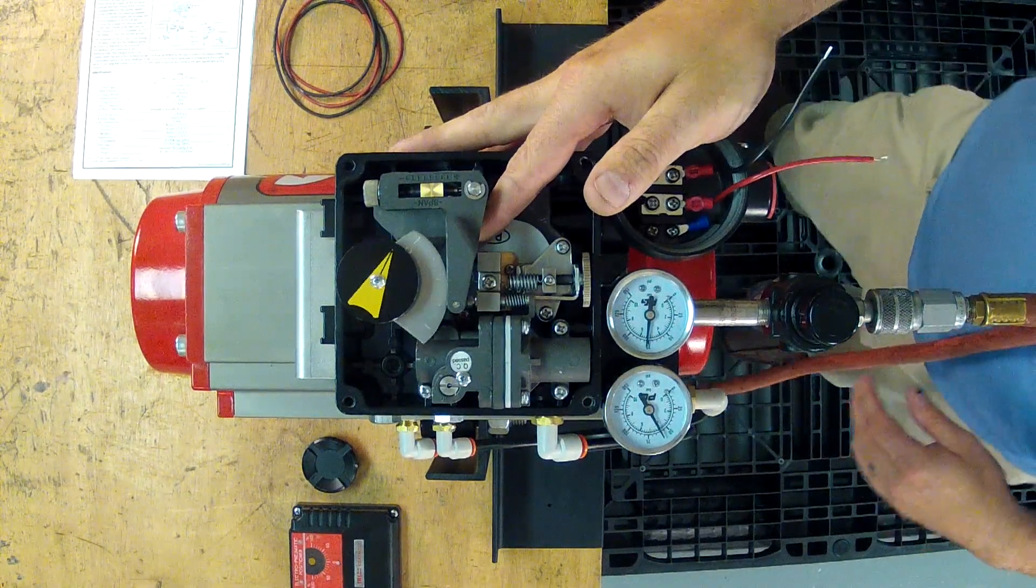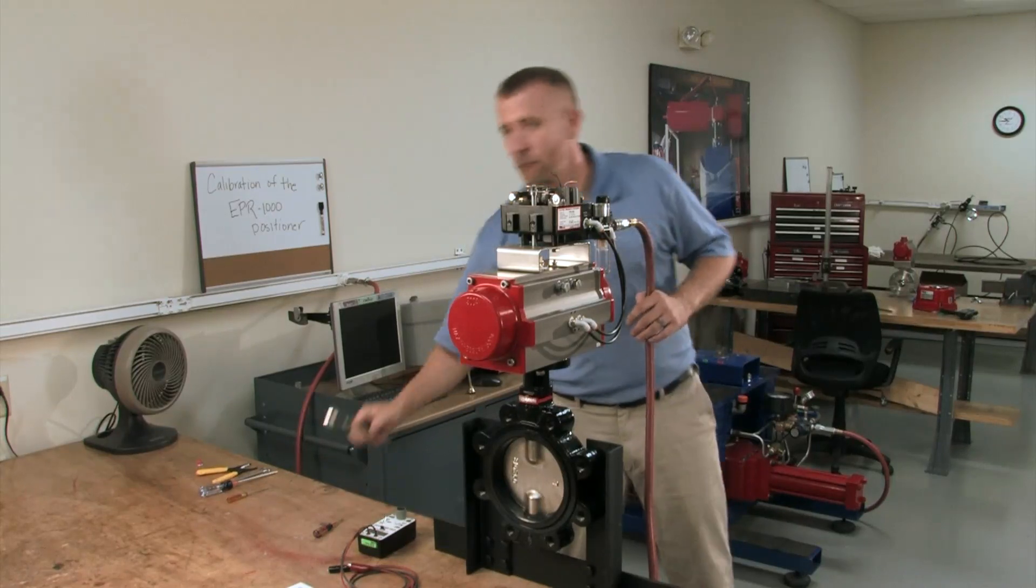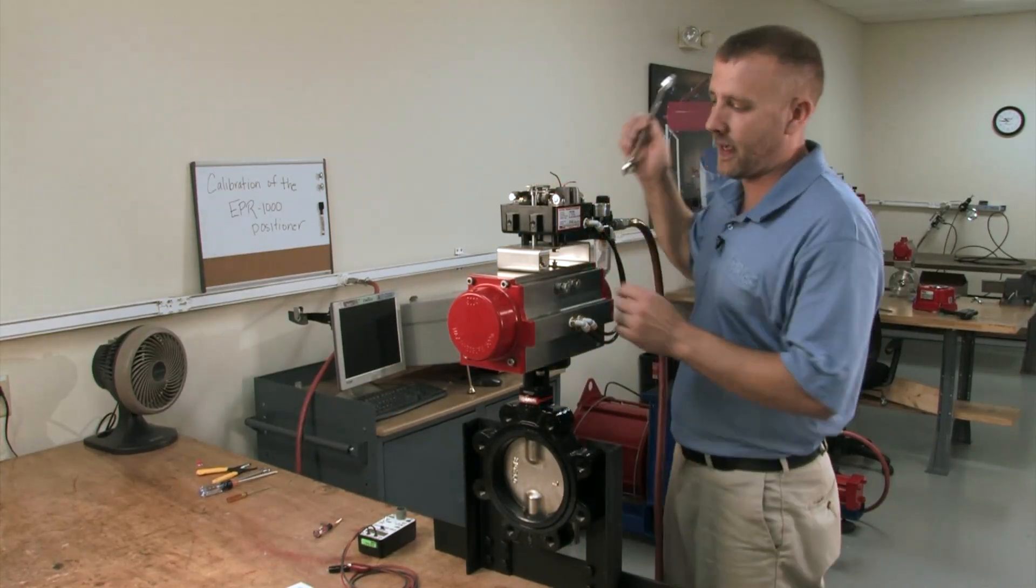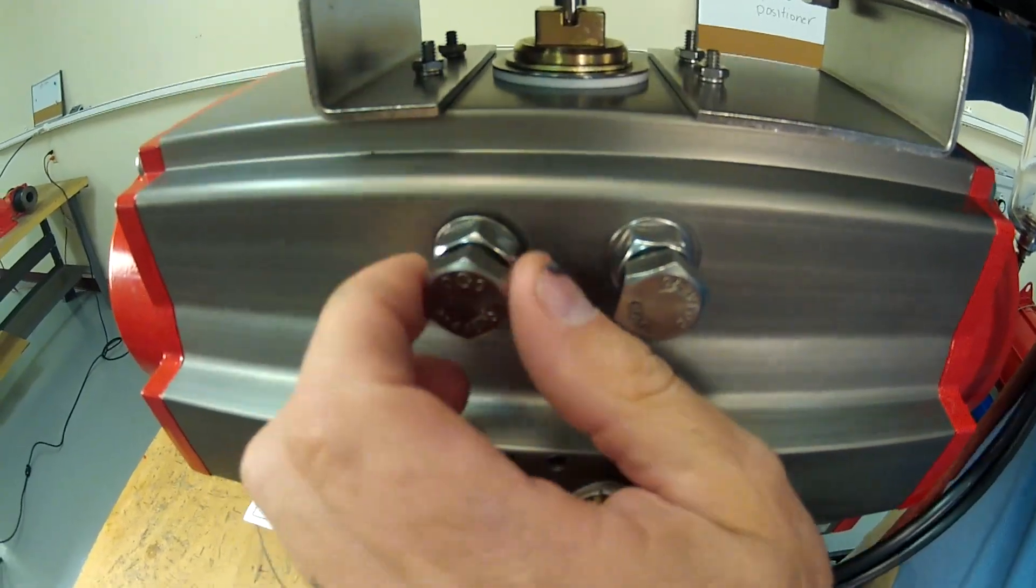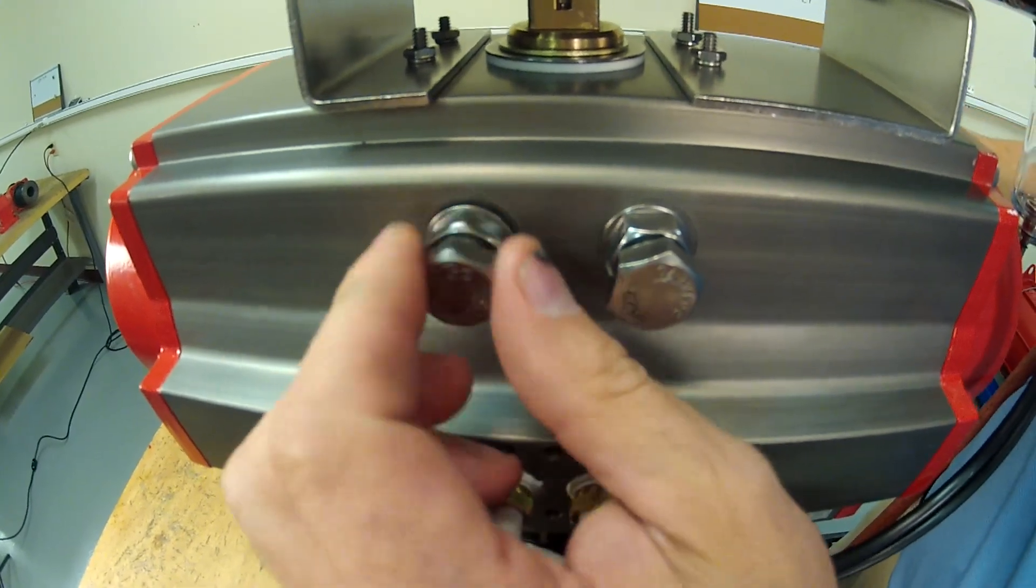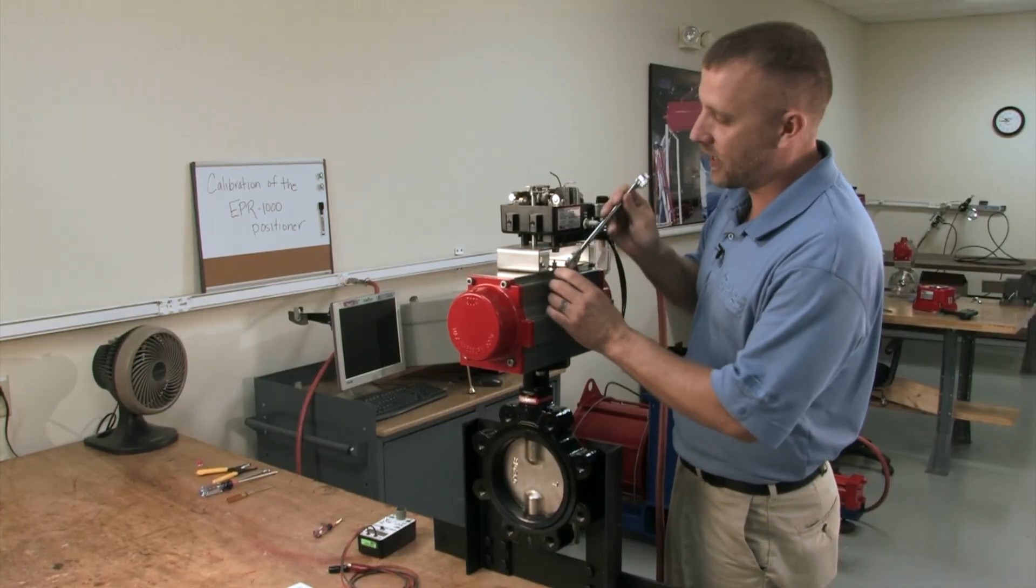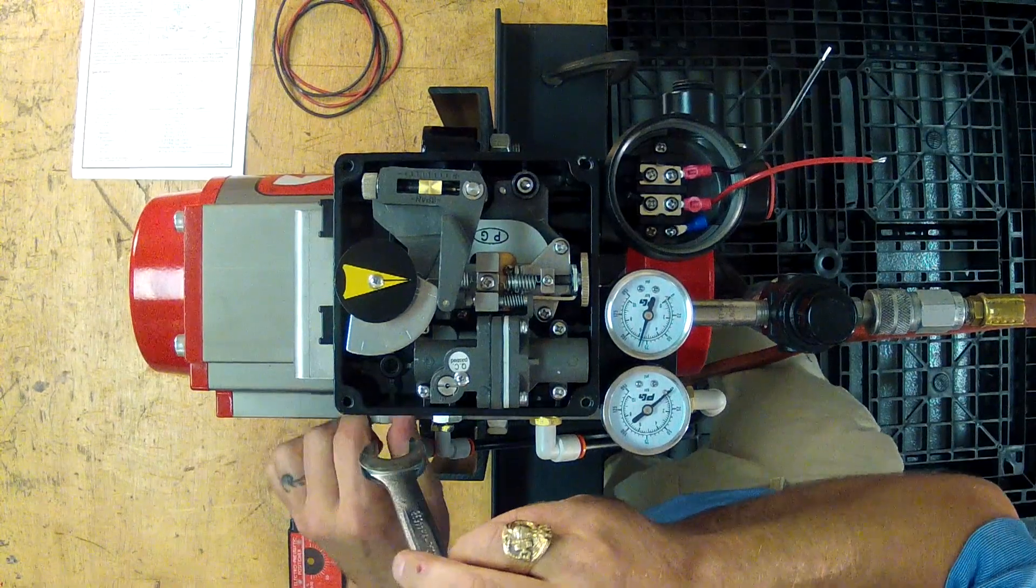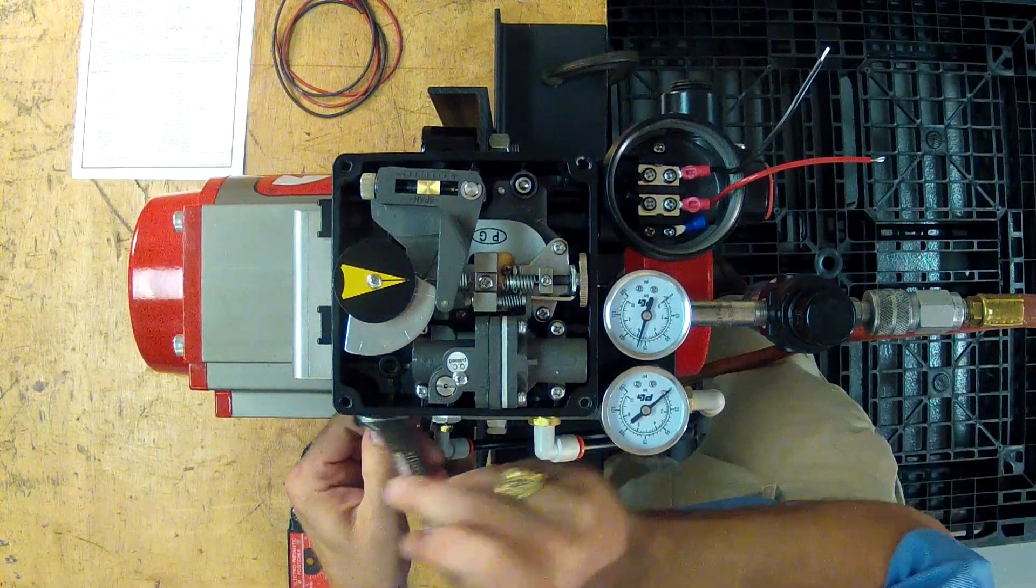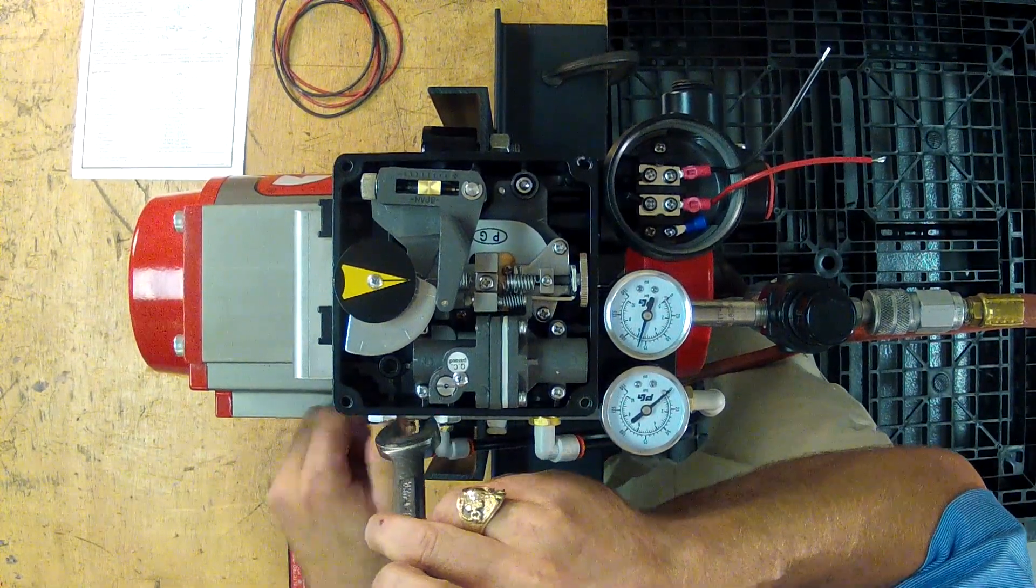But I'm going to demonstrate how to adjust that. Before adjusting your travel stops, you must relieve the spring force that is on your travel stops. This being our open stop, you have five degrees positive and five degrees negative travel on the open and closed stop.